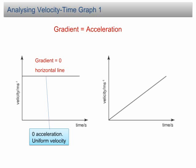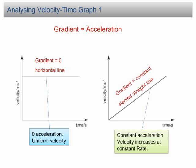The second graph is a slanted straight line. For a straight line, the gradient is constant. Therefore, this graph shows a constant acceleration. It means the velocity increases at a constant rate.